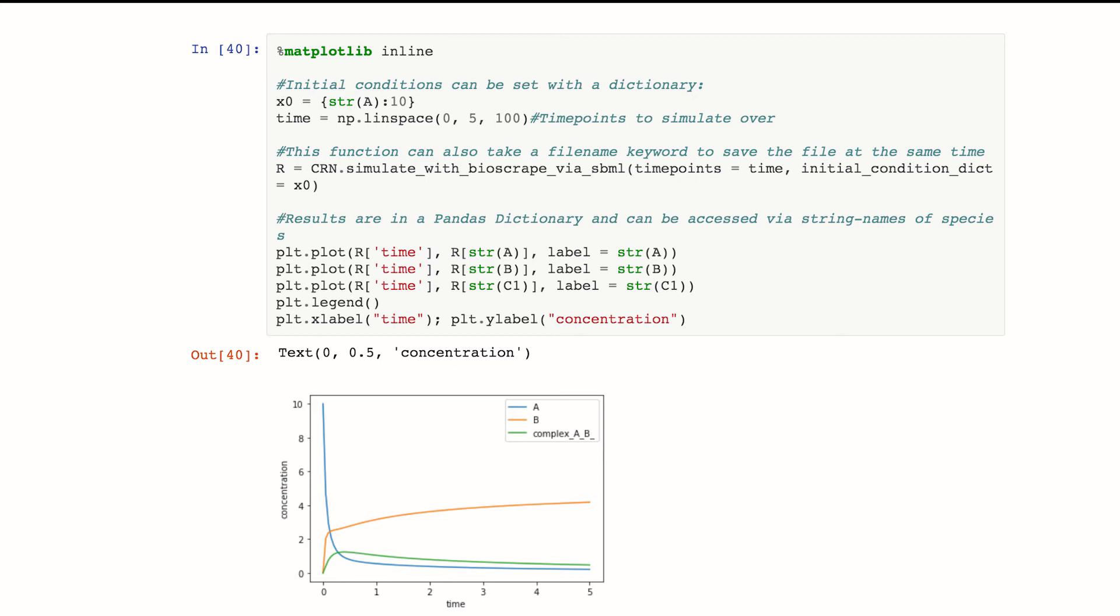I define my time points here. I'm going from 0 to 5 with 100 time points in between. And now I just type in R is equal to CRN.SimulateWithBioscrape via SBML. I give it my time and I give it my initial condition. And it's going to return a pandas data frame.